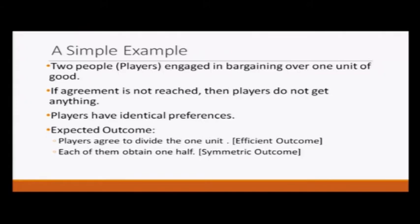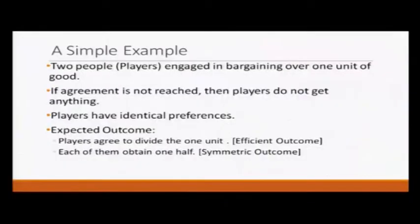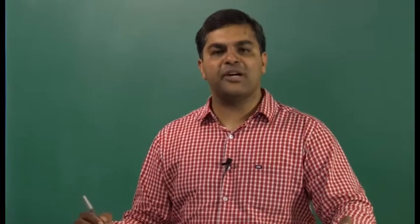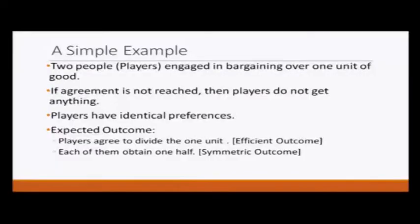Let us start with a very simple example without thinking about any game theory: two players are engaged in bargaining over one unit of a good. If agreement is not reached then players do not get anything, and both players have identical preferences — they are in an identical scenario. We expect that players will agree to divide this one unit because it will benefit both of them. This is basically the efficient outcome, and each of them obtains one half — the symmetric outcome.